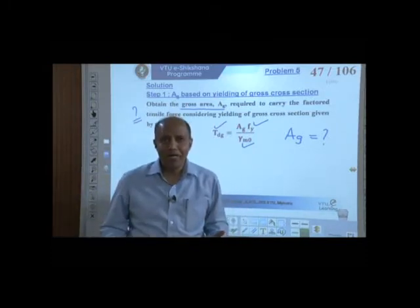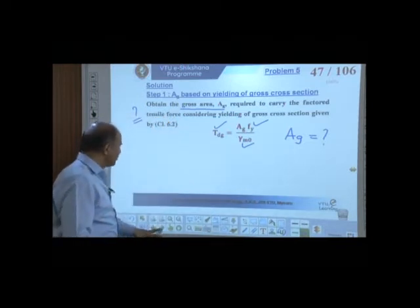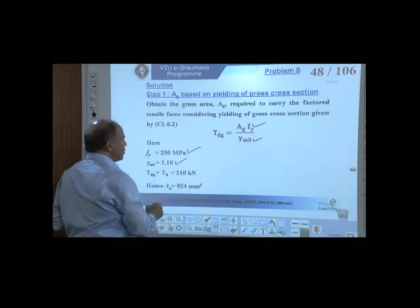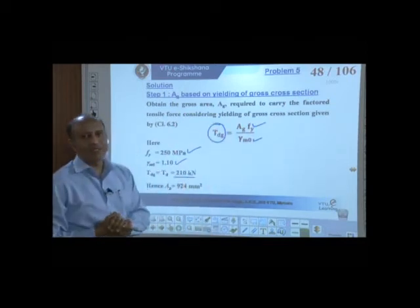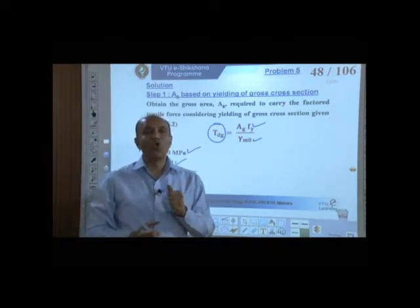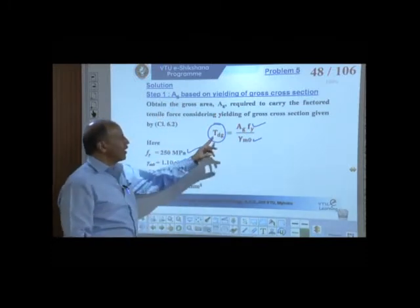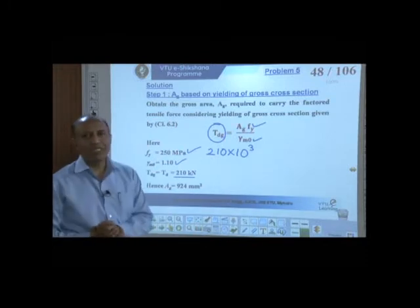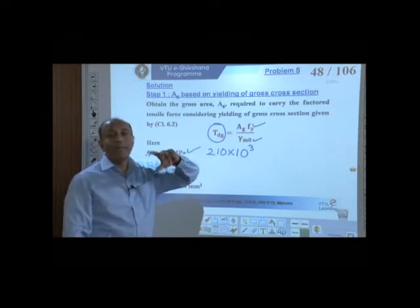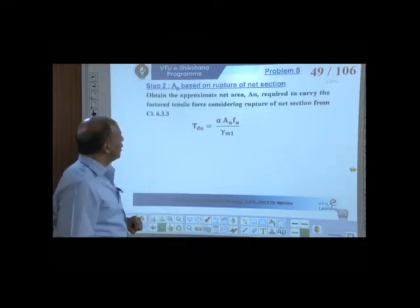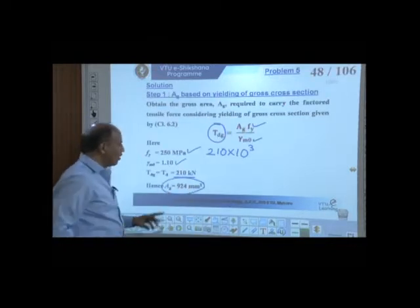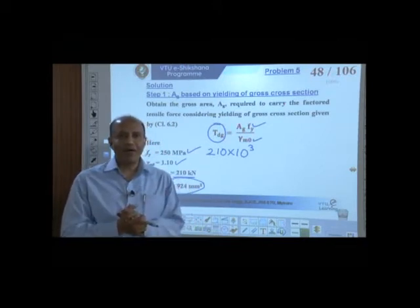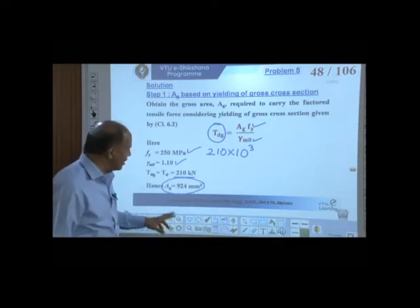The factored load is 210 kN. Substituting into the expression — converting to Newtons: 210 × 10³ N, fy = 250 MPa, γM0 = 1.10 — whatever area we get will be in mm². The value of Ag required with respect to gross section yielding is 924 mm².